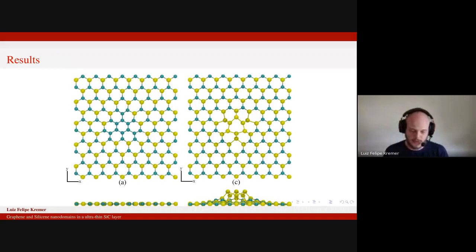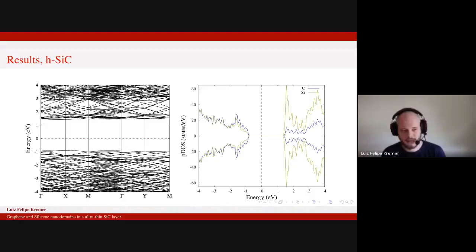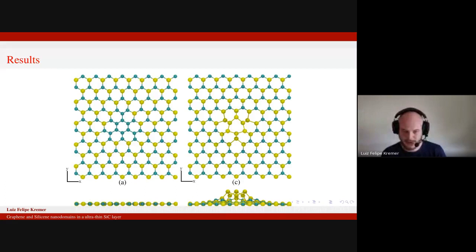We also saw this for the pristine material. Now we go for the domains. As you can see in the center of the cells in the top images, we change the atom by the other species. So you can see that in the left side, we have graphene nanodomain and on the right side, we have the silicon nanodomain.